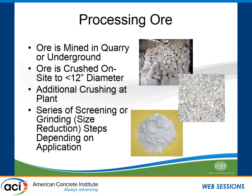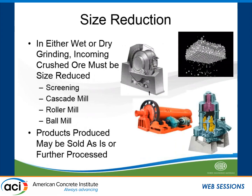How does it turn from ground rock into ground calcium carbonate? It's mined, either underground or in a quarry. It goes through a jaw crusher to reduce its size, and then there's additional crushing, screening, and grinding. The grinding can be done by cascade or ball mill or roller mill. That's how the material gets produced into a fine powder with a median particle size of 10 to 3 micron.